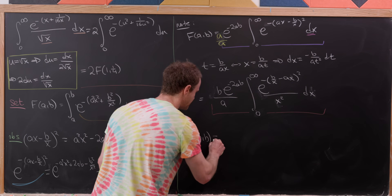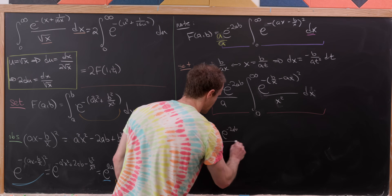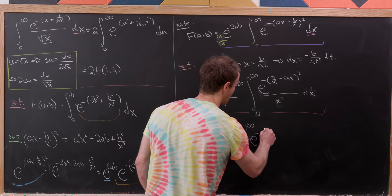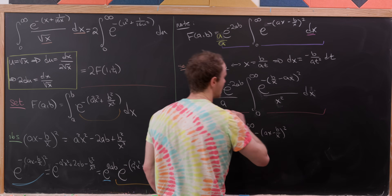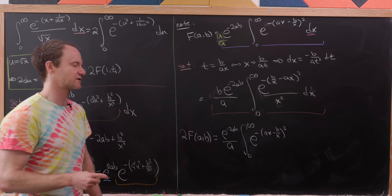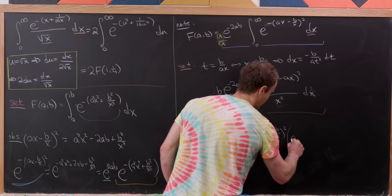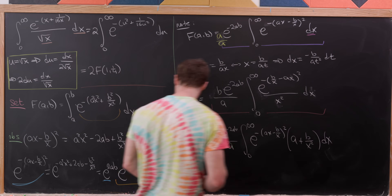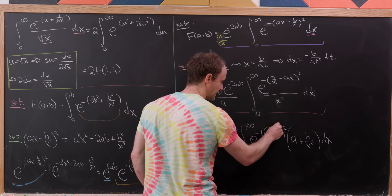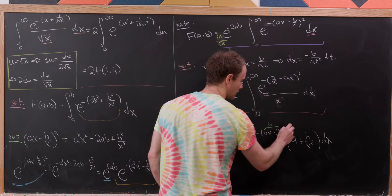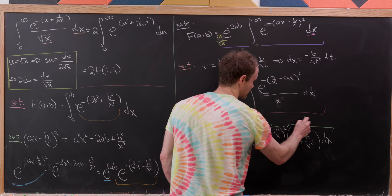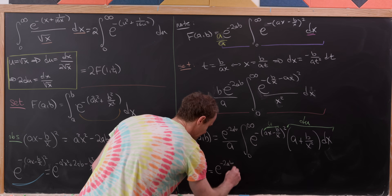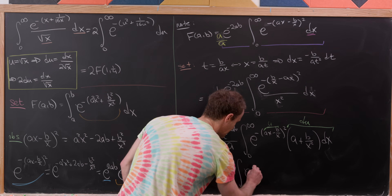Adding the two expressions gives 2 times f(a, b) equals e to the minus 2ab over a, times the integral from 0 to infinity of e to the minus (ax minus b/x) squared, multiplied by a plus b over x squared, dx. The exponential terms in both are the same (a minus sign inside the square doesn't matter), and the prefactor a plus b/x squared is exactly du if we set u equal to ax minus b/x.